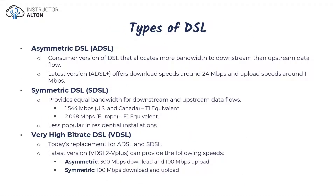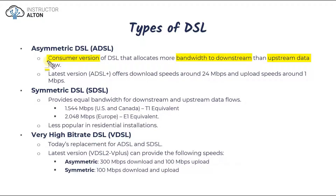There are three different types of DSL: asymmetric DSL, symmetric DSL, and very high bit rate DSL. Asymmetric DSL is the consumer version of DSL where they allocate more bandwidth to your download than to your upload. When we talk about downloading and uploading, we're talking about downstream data and upstream data — downloading is downstream data and uploading is sending data to the internet.